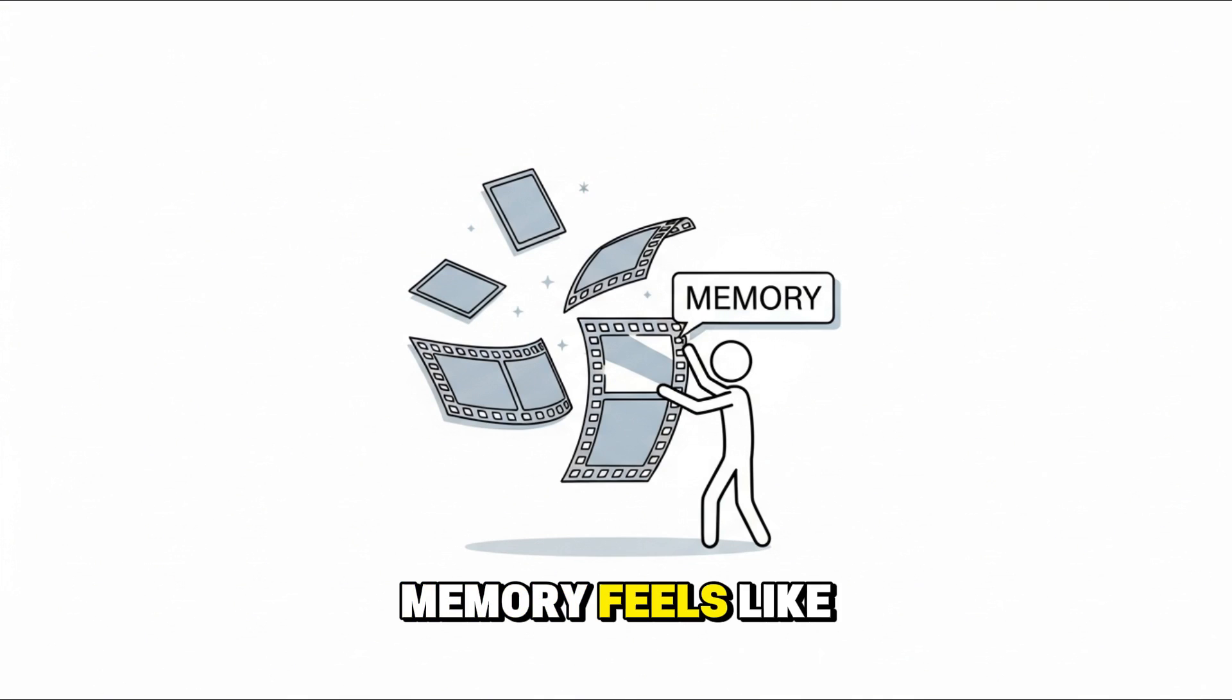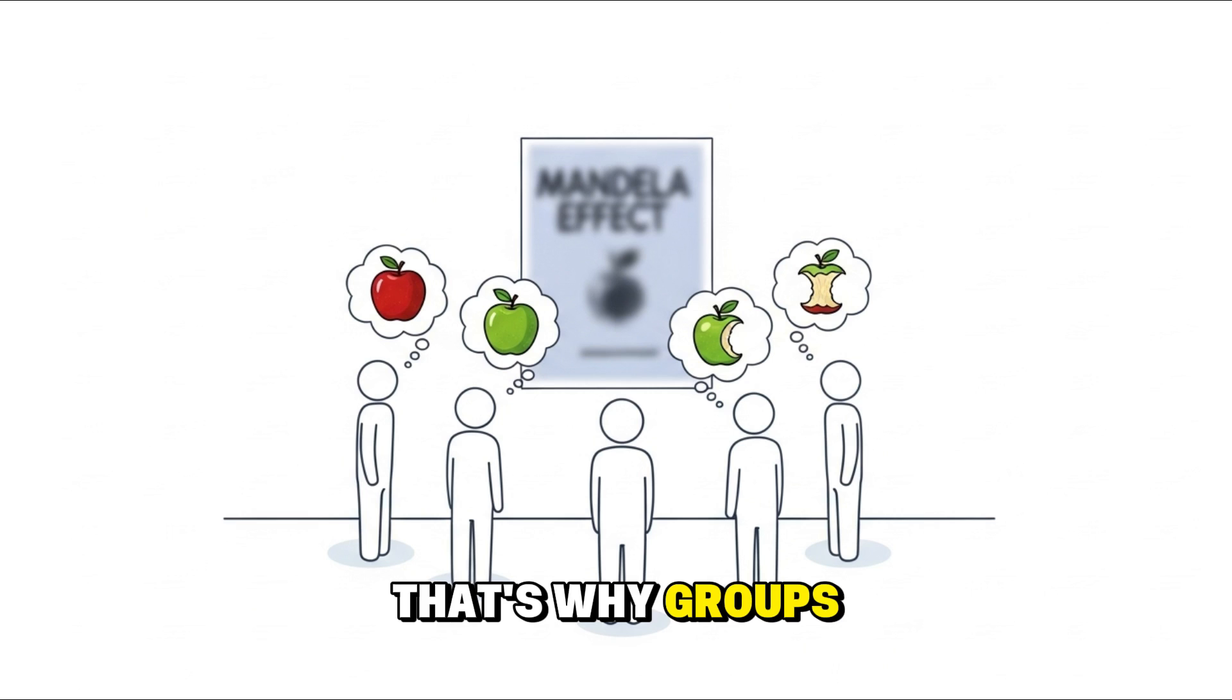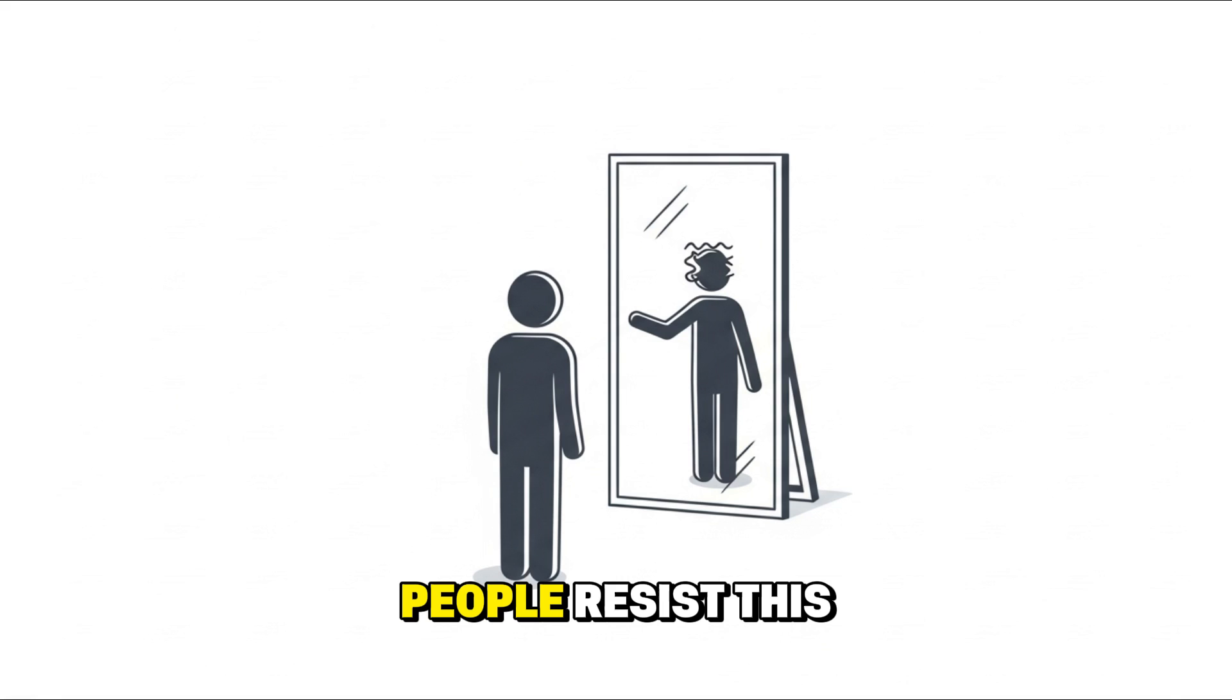Memory feels like a recording. But it's actually a reconstruction. Every time you recall something, your brain rewrites it slightly. That's why groups of people can confidently remember events that never happened. The Mandela Effect. Your brain edits memories to protect your identity, to make stories consistent. People resist this fact because it's uncomfortable. If memory can lie, what else might not be real?